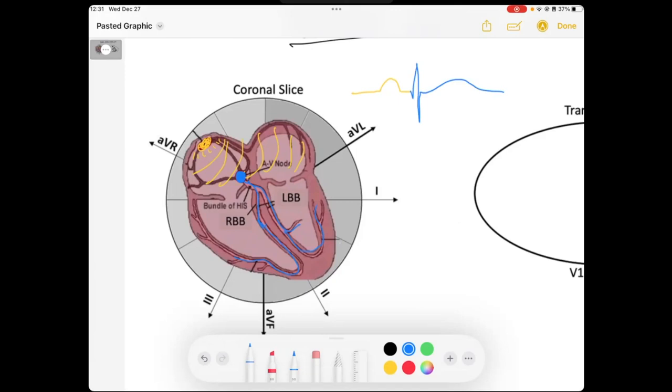And so because we have this nice His-Purkinje system that our ventricles depolarize through, that's our highway system, that is what causes this QRS to be narrow.